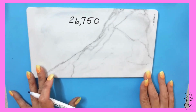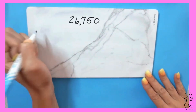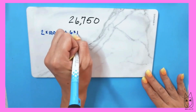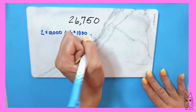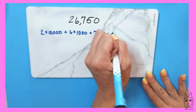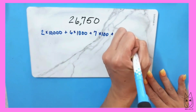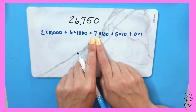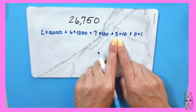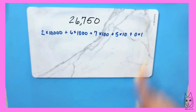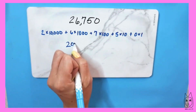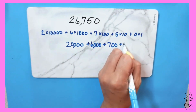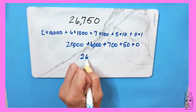In this number, the greatest place value we have is 10,000. So I'm going to do 2 times 10,000 plus 6 times 1,000 — that 6 is in the thousands place — plus 7 times 100 plus 5 times 10 plus 0 times 1. The digit 2 is in the 10,000 place, digit 6 is in the thousands place, digit 7 is in the hundreds place, digit 5 is in the tens place, and digit 0 is in the ones place. So that gives us 20,000 plus 6,000 plus 700 plus 50 plus 0, which gives us 26,750.